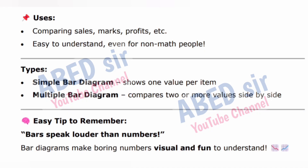Uses: comparing sales, marks, profits, etc. Easy to understand even for non-math people. Types: Simple bar diagram shows one value per item. Multiple bar diagram compares two or more values side by side. Easy tip to remember: Bars speak louder than numbers — bar diagrams make boring numbers visual and fun to understand.